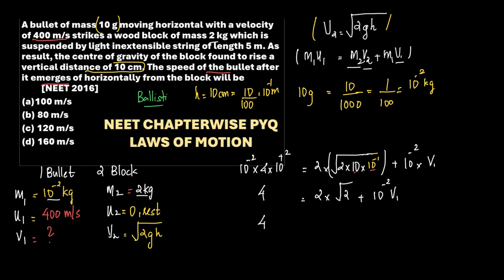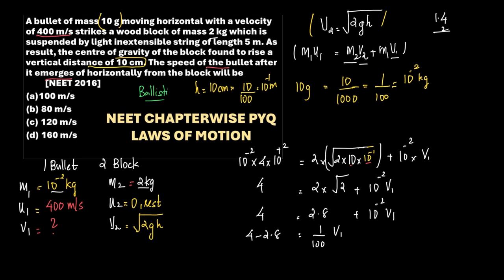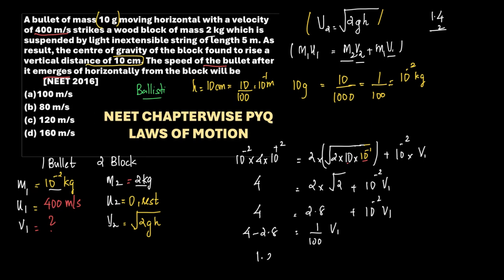Therefore: 4 − 2.8 = (1/100)·V1, so 1.2 = (1/100)·V1, giving V1 = 1.2 × 100 = 120 m/s. Therefore V1 = 120 m/s, which makes the correct option C.